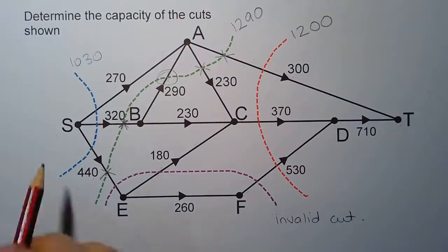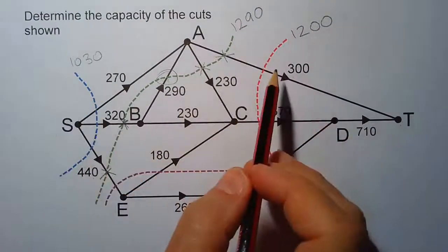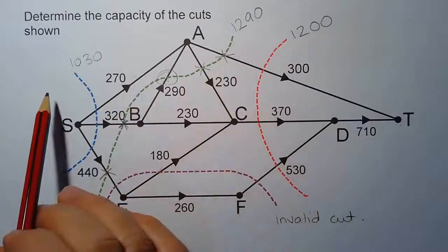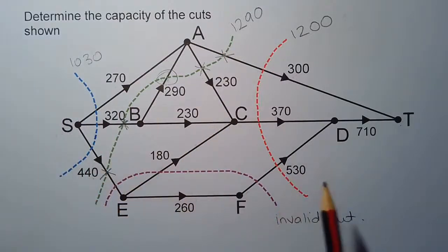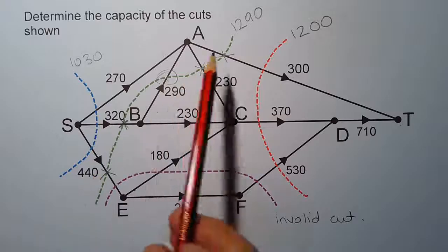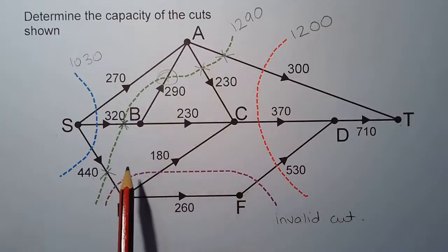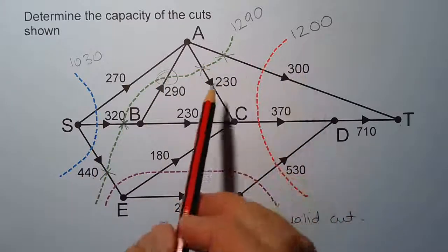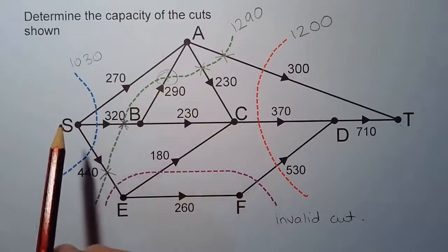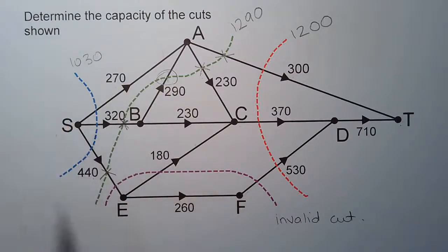Notice that each of the three valid cuts has a different capacity. There are other cuts that could be made as well. Later on, when we talk about the minimum cut and maximum flow theory, we'll find that there is a cut that gives the minimum cut value, which in turn determines the maximum flow of the network from source to sink.